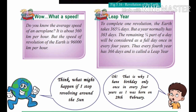For one rotation, the earth takes 24 hours or one day. For one revolution around the sun, the earth takes one year, or 365 and a quarter days. In a normal year, when we calculate calendar days, there are only 365 days. The remaining quarter part of a day accumulates and is counted as a full extra day once every four years. Thus, every fourth year has 366 days, and that year is called a leap year.